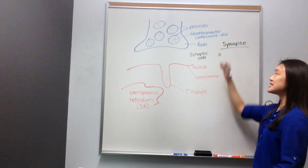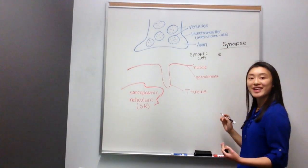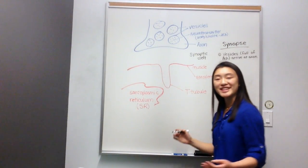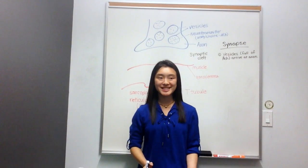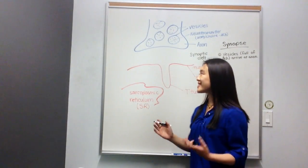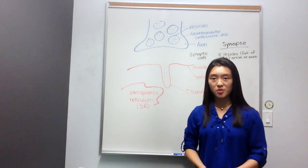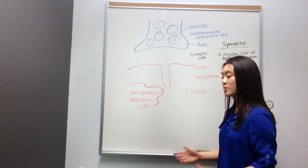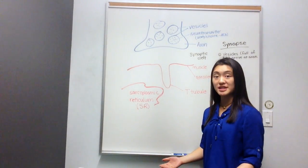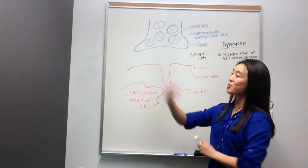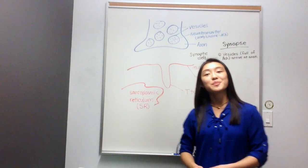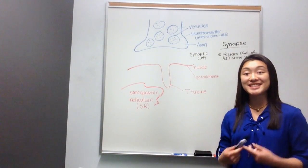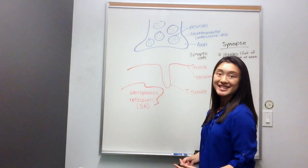Event number one is the vesicles arrive at the axon. The vesicles are full of acetylcholine, and they're just waiting to be released. You can think of it as people waiting to cross the street — there's an intersection, and people are just waiting and waiting for the light to change. They've all accumulated and they're waiting for the signal, which is a green light.